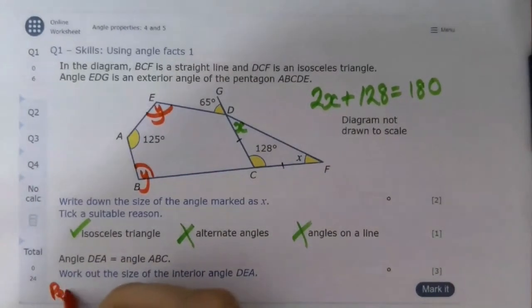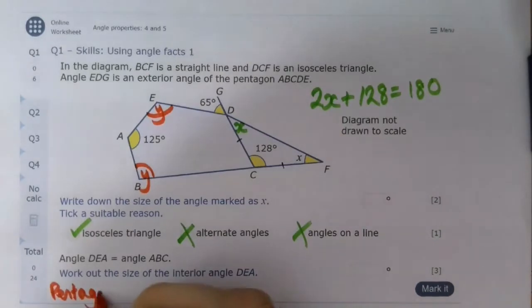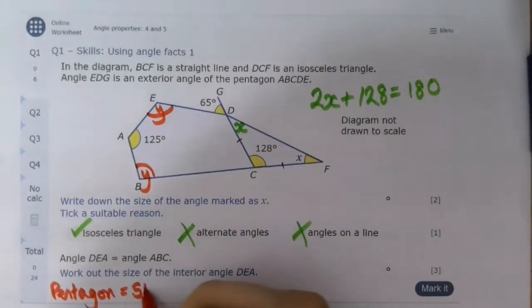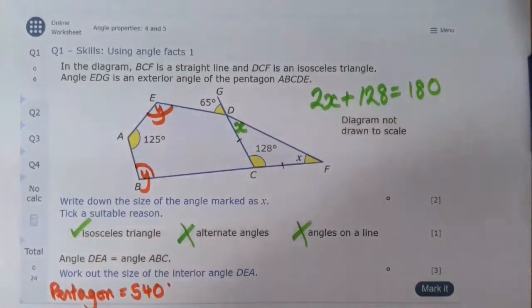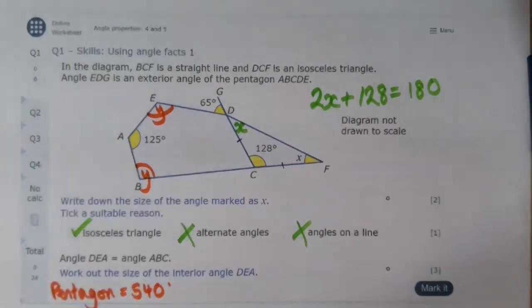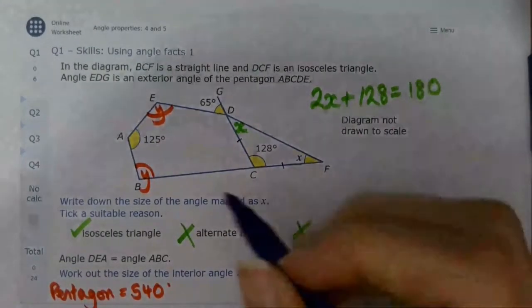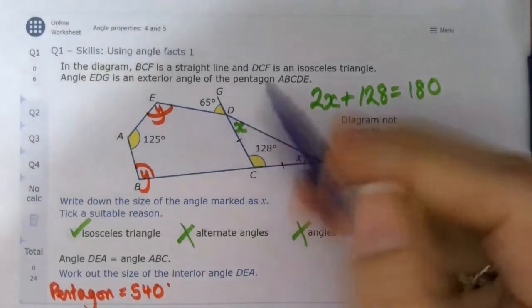Now as before, remember this is a pentagon, so we need to remember that a pentagon has 540 degrees inside it. Then we need to look at the diagram and see what else we can work out. Look, we've got a couple of those given to us. What can we work out?